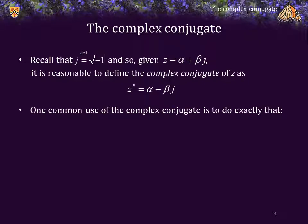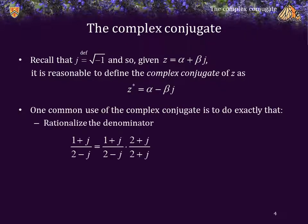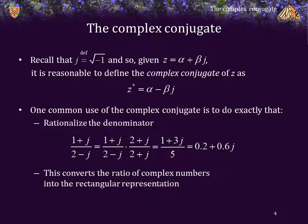One common use of the complex conjugate is to do exactly what we just did: rationalizing the denominator. Specifically, here we have 1 plus j over 2 minus j. We multiply by the complex conjugate of the denominator over that same conjugate. Multiplying out both the numerator and the denominator, we have that ratio is equal to 0.2 plus 0.6j. Thus, using the complex conjugate, we converted a ratio of complex numbers into the rectangular representation.